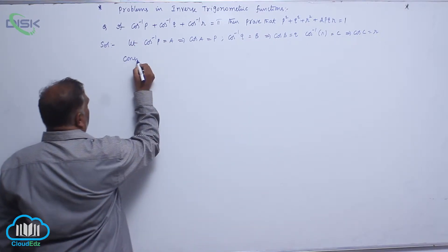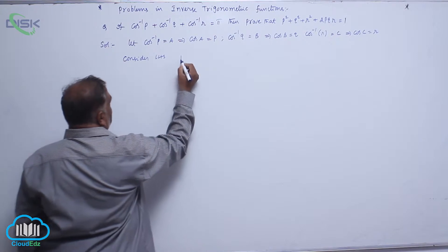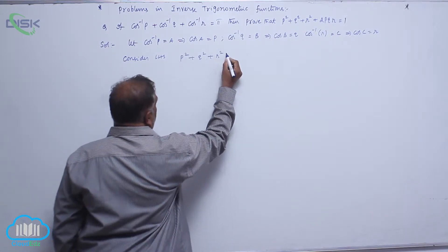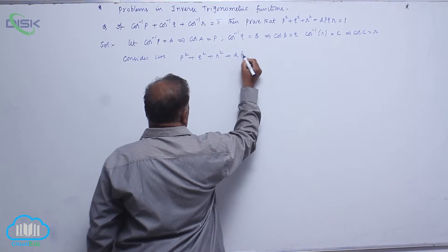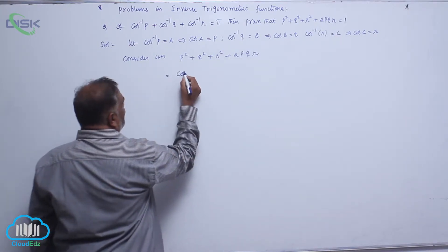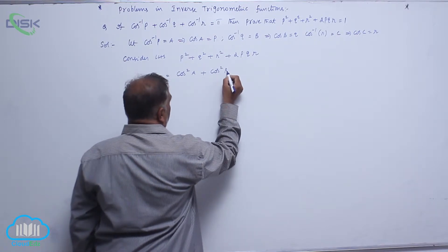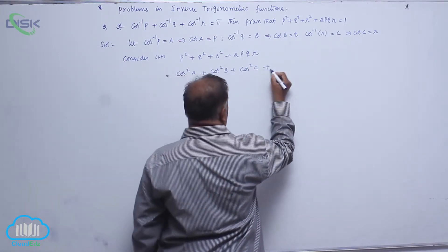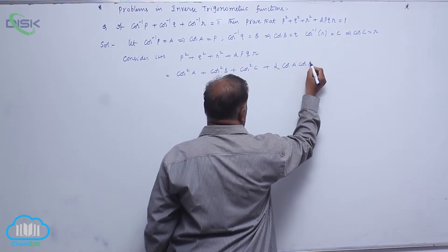Consider the LHS: P squared plus Q squared plus R squared plus 2PQR, which becomes cos squared A plus cos squared B plus cos squared C plus 2 cos A cos B cos C.